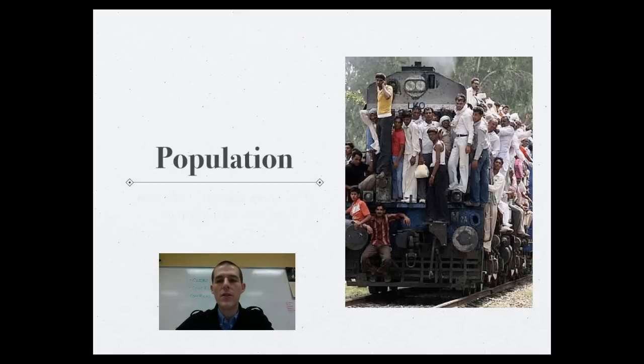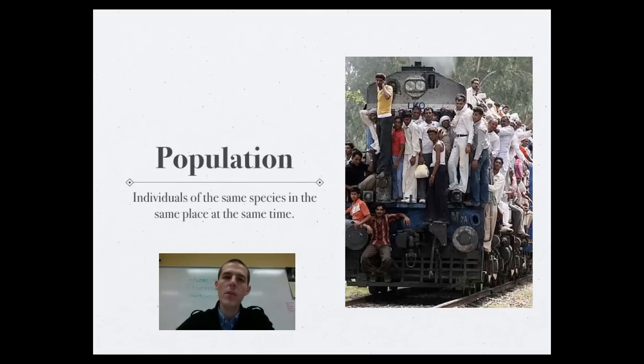As we're talking about ecology, the first thing that we need to talk about is what exactly is a population. For the purpose of our discussions throughout this ecology section, population is simply defined as individuals of the same species in the same place at the same time. It doesn't matter what sort of organism you're talking about. When I am teaching a class, the population would be my classroom because we're all humans within the same room. But students outside of the classroom don't count as part of the population because they're not in the same place at the same time.